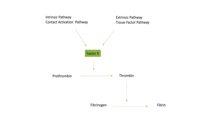One factor 10 molecule can convert hundreds of prothrombin molecules to thrombin. Thrombin then has positive feedback effects on upstream clotting factors, resulting in activation of more factor 10 molecules, which produces more thrombin. Thrombin also contributes to the activation of platelets.